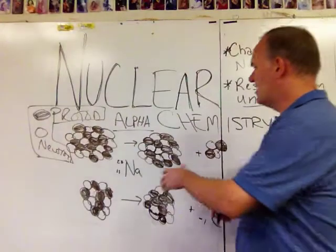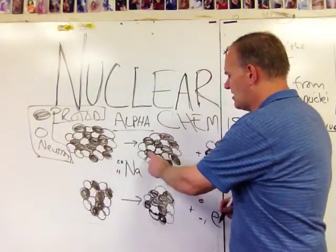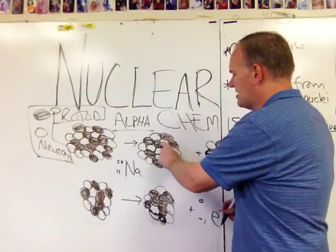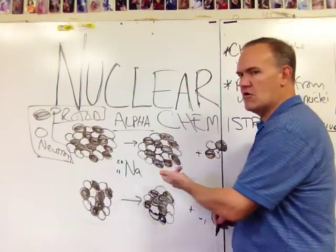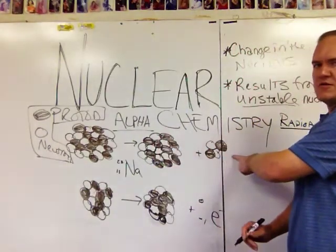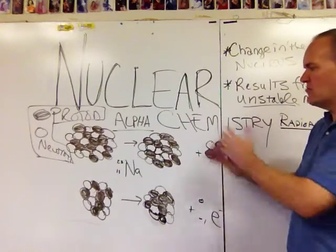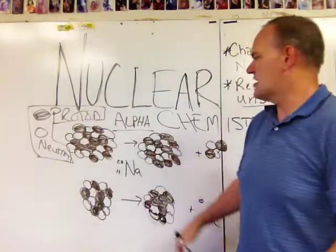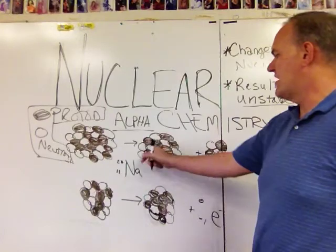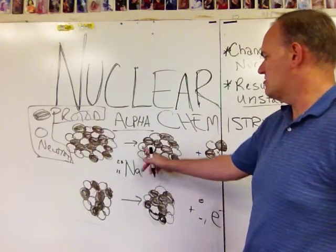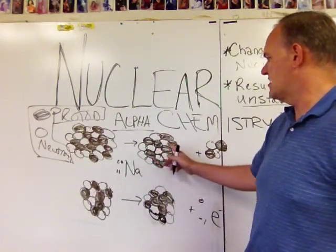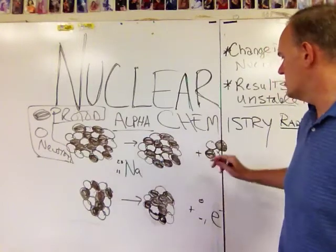They just kind of leave. If you count those up, then now instead of having eleven protons, we should have nine. Where does the other two go? Well, they're over here in this other particle that got shot out. It's no longer part of that nucleus. And it also shot out two neutrons, so instead of having twelve, we should have ten neutrons.